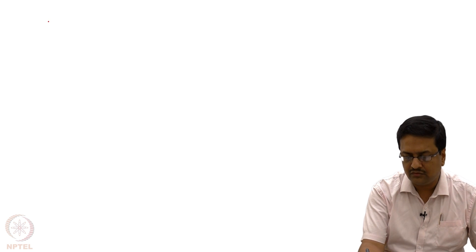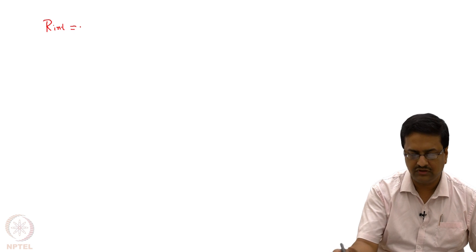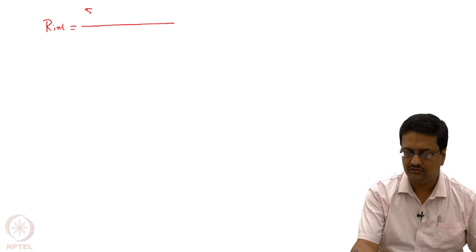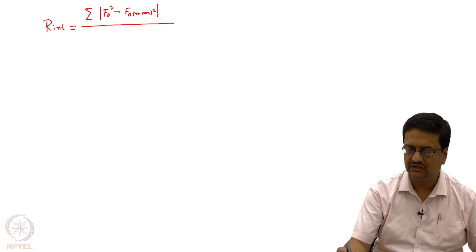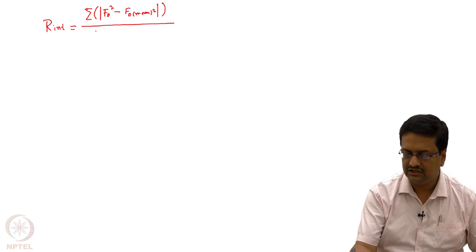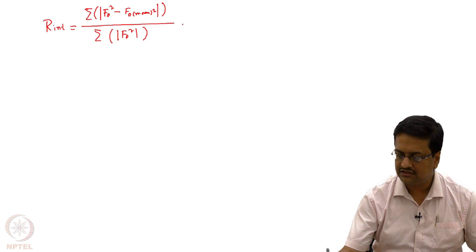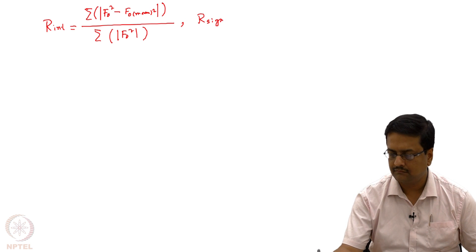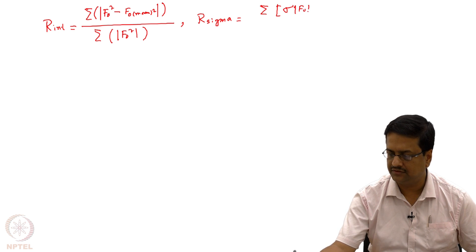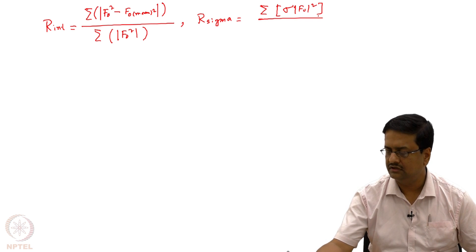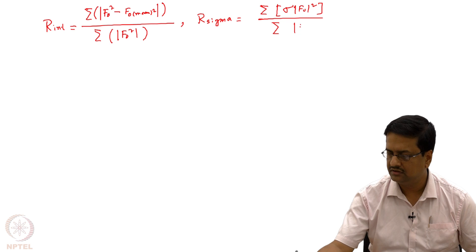When we have data, we see a parameter called R_int, which is nothing but the sum of |Fo² minus Fo_mean²| divided by the sum of Fo². Another term, R_sigma, is equal to the sum of standard deviations of Fo² divided by the sum of Fo².